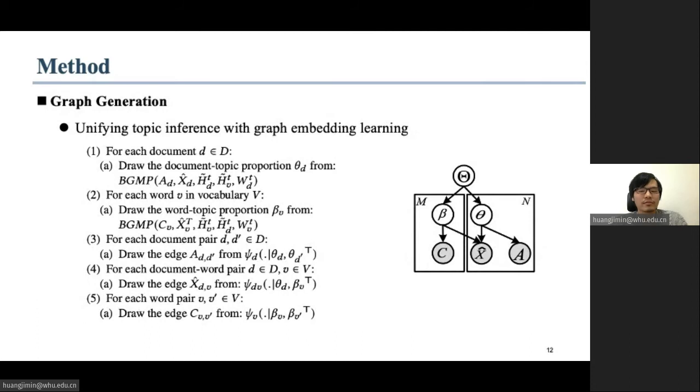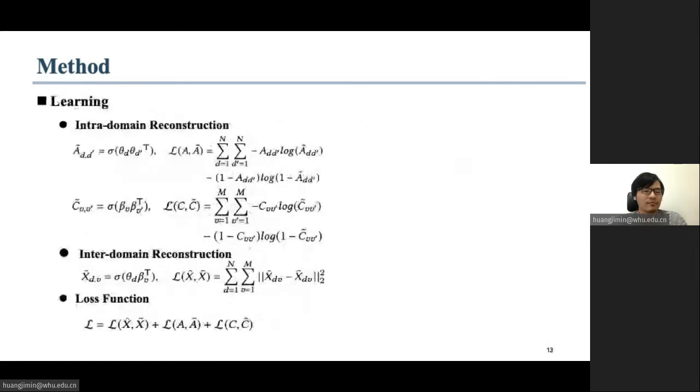To unify topic inference with graph embedding learning of document and word nodes, in addition to the above information propagation process, our model also aims to generate the given document-word bipartite graph X bar, document-document correlation graph A, and word co-occurrence graph C, based on the derived latent document-topic theta and latent word-topic beta matrices, as shown in the generative process. Given the generative process, our model can be trained by optimizing the joint reconstruction loss of generating documents, as well as the document and word-word networks based on the derived document-topic and word-topic representations theta and beta.